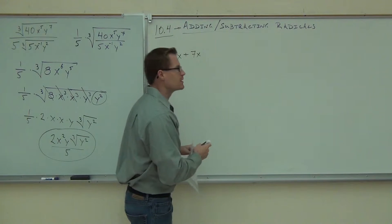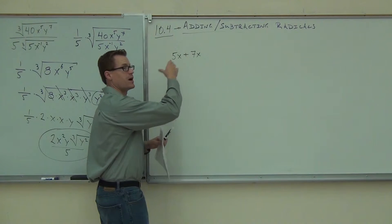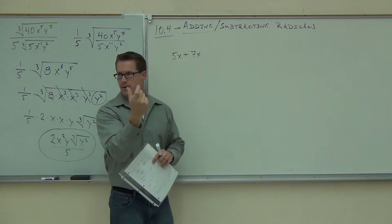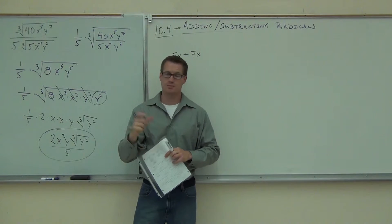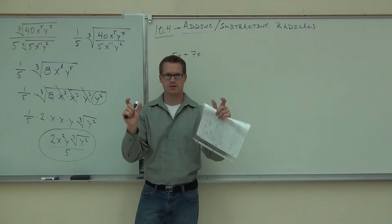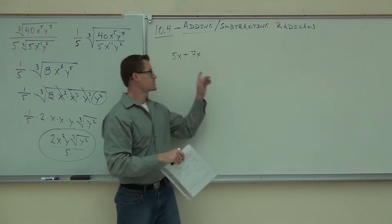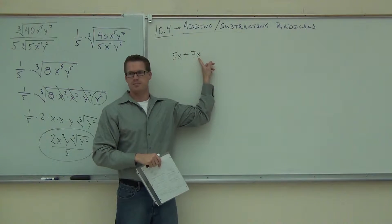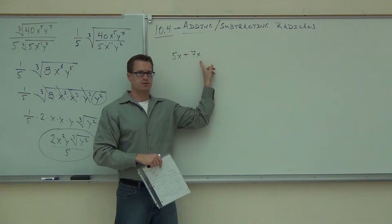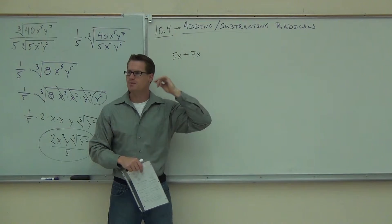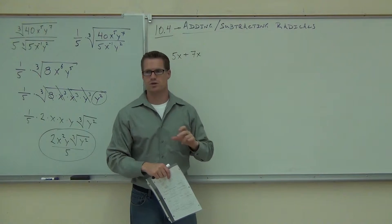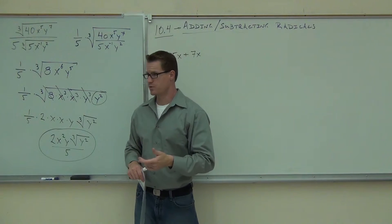So when you're combining like terms, you look at the coefficients. You're able to add these because you have an x and you have an x. If this was an x and that was a y, could you add them? No. If this was an x and that was an x squared, could you add them? No. If you keep that in mind, adding and subtracting radicals are going to go very smoothly for you.